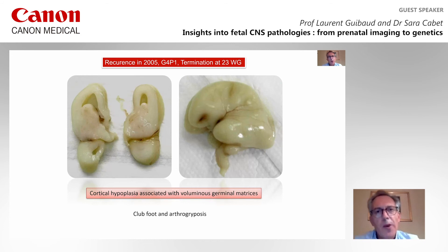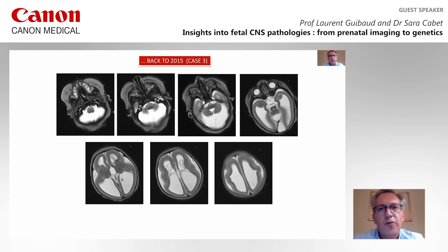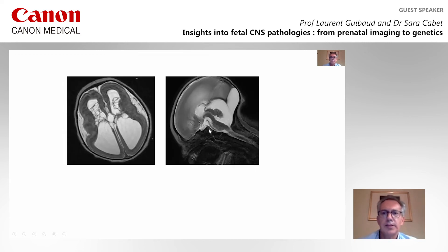For this family, there was a recurrence in 2005, with termination at 23 weeks, and on the fetal specimen you can see a very huge germinal matrix zone with an almost agyric cortex. These findings were associated with club foot and arthrogryposis. Going back to the 2015 case, at birth there were very small eyes, cystic changes in the germinal matrix, and this very specific brainstem dysgenesis with these elongated pons. This case was associated with club hand and feet, microphthalmia, and hypotonia.